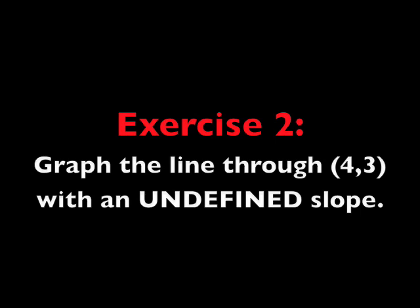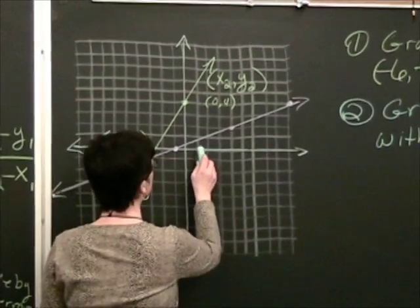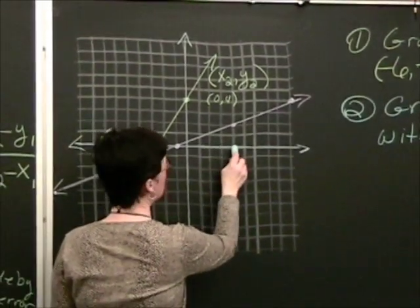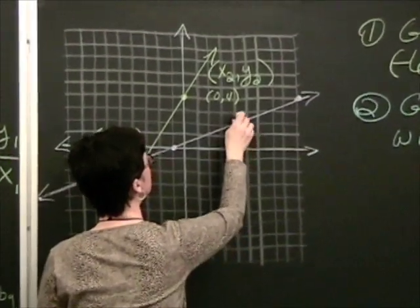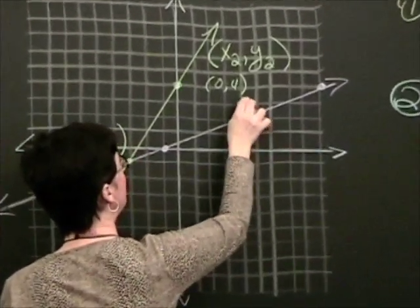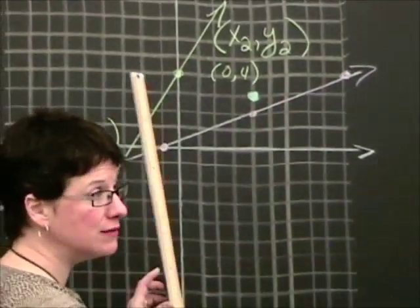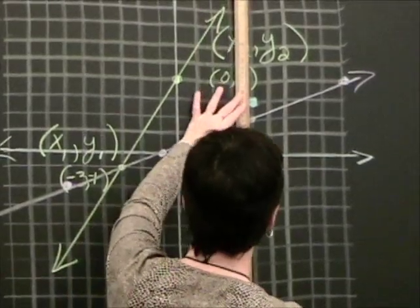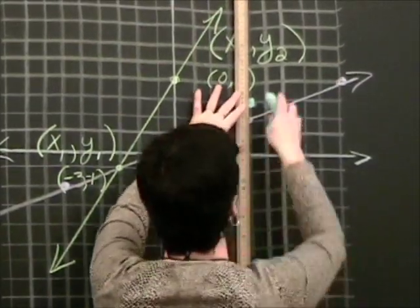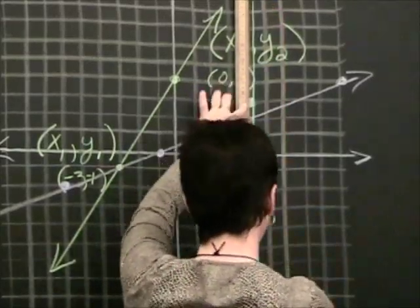Exercise 2. Graph the line through the point 4, 3 with an undefined slope. So, 1, 2, 3, 4, and then up 3, 1, 2, 3. So 4, 3 will be right there. And if it's got an undefined slope, it's vertical. So you just draw in the vertical line that passes through 4, 3.